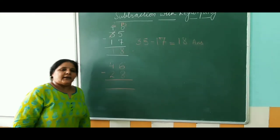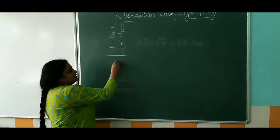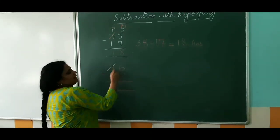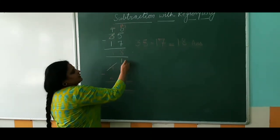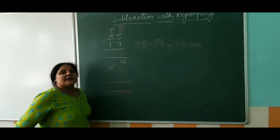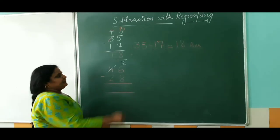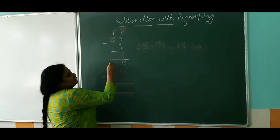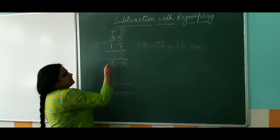Now again we have to ask from the tens to give 1 ten to the ones. So it becomes 16 out of 16, and out of 4 there are only 3 tens.